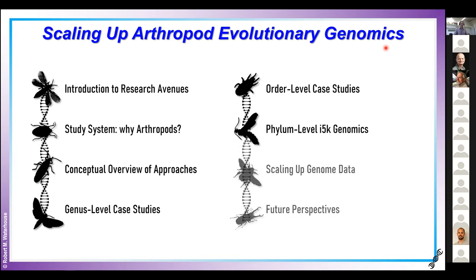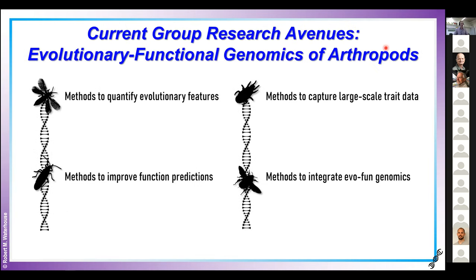And then hopefully, if there's a bit of time, to briefly discuss what's coming up next in terms of the new genomic resources being generated and what this means for the future of arthropod evolutionary genomics. The current research themes in my group are really focused on connecting evolutionary and functional genomics in arthropods.